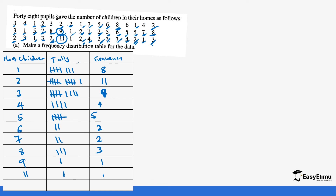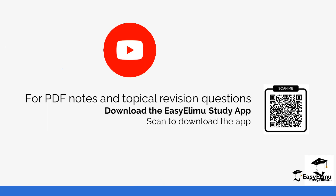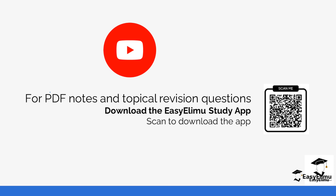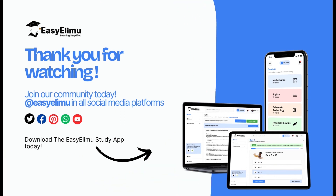Add all your tallies and frequencies and ensure the total reaches 48. If it does not, then somewhere you've made an error. That's how you prepare a frequency distribution table. This will be important for our next session as we look at median and mean. You can get more notes and practice questions in the app. That's it for today — see you in the next lesson.